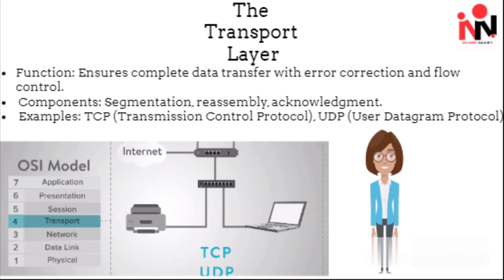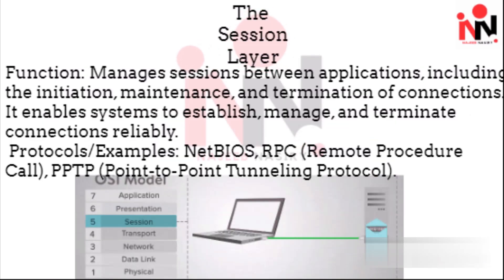The transport layer ensures complete data transfer with error correction and flow control. The components include segmentation, reassembly, and acknowledgement. Examples include TCP (Transmission Control Protocol) and UDP (User Datagram Protocol).